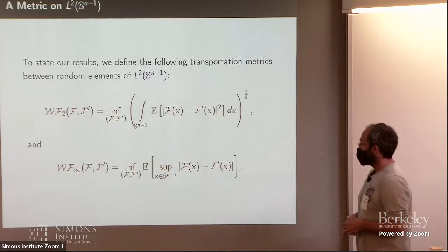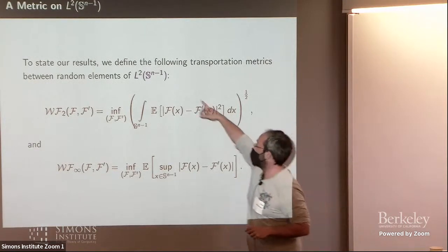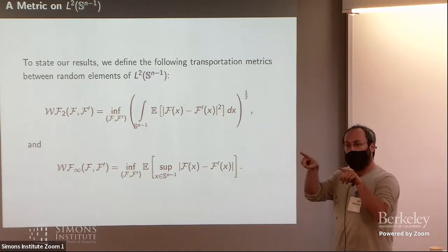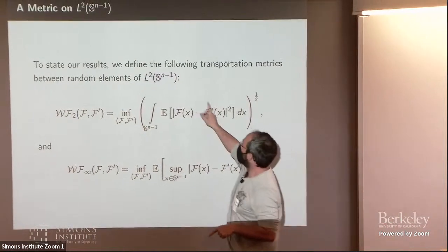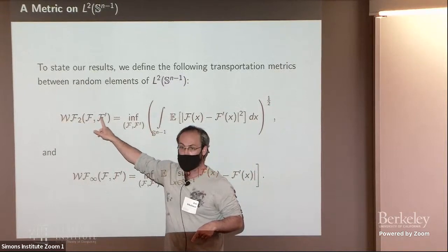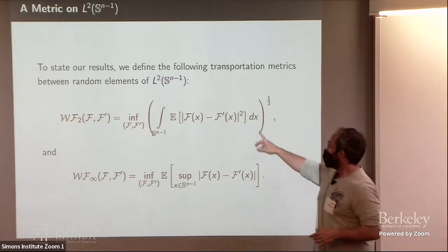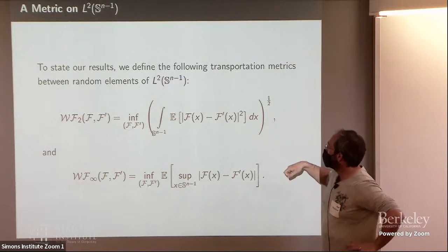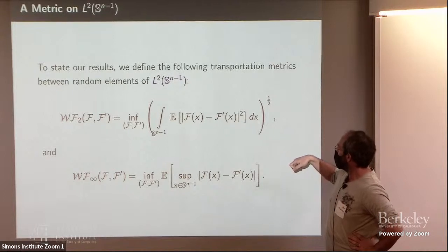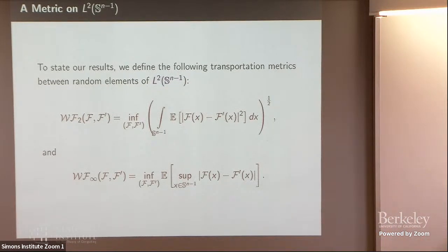If we can understand the notation, you've got the arguments... Yes, and then... Right, but... Two random functions, two random elements in L^2 of the sphere. The infimum was over all couplings. It's over all measures on L^2 of the sphere times L^2 of the sphere such that the first marginal is F and the second marginal is F prime. This is Wasserstein 1 on L^2. The integral in the square root should be outside. Yes. Right, I think this is Wasserstein 2 on L^1. Sorry. Thanks.